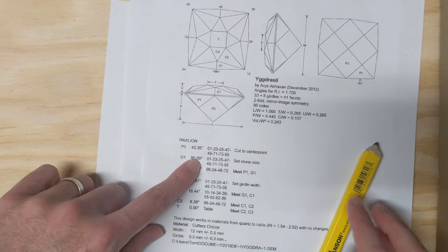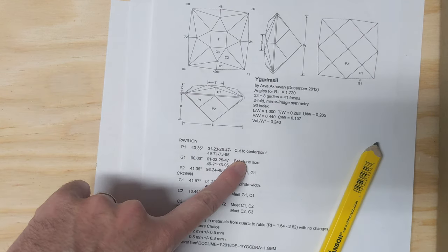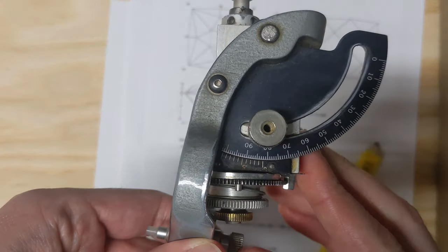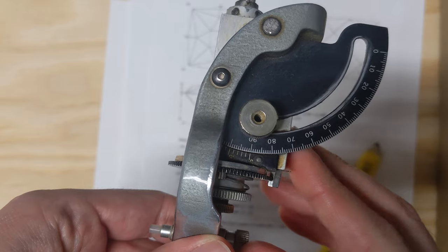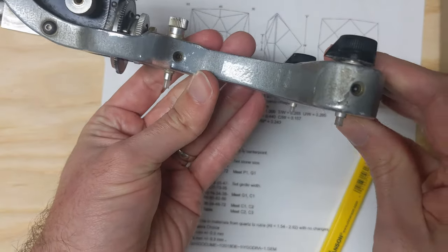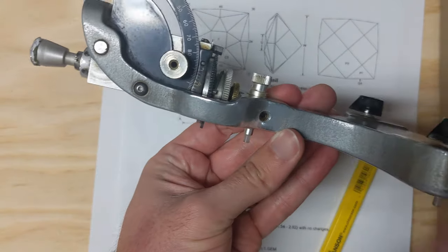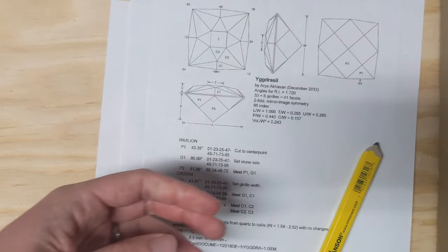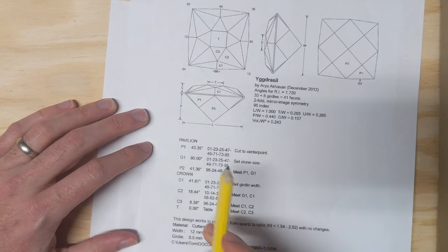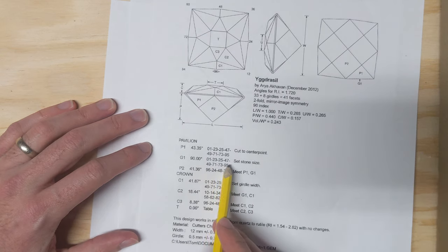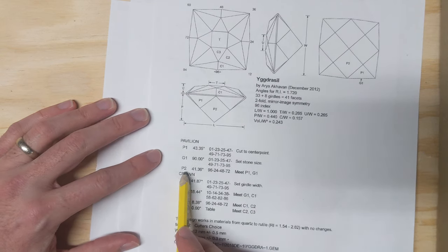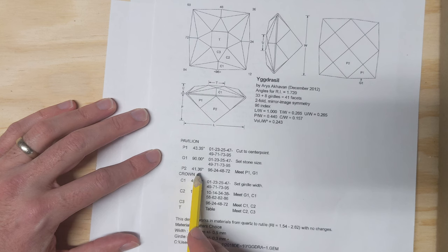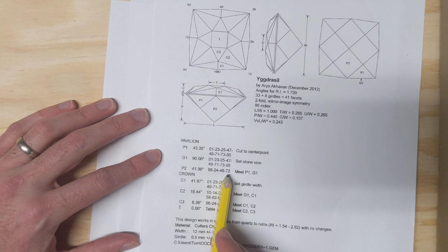Then you would change it to do the girdle to set the size of the stone. You do that by bringing the protractor down to 90 degrees. This handpiece design sits on a table over here, and so the girdle sticks out straight here. You would lay that on the lap disc and cut out your girdle in those angles, and then go in and change it to the P2 setting at 41.36 and do those last four cuts.